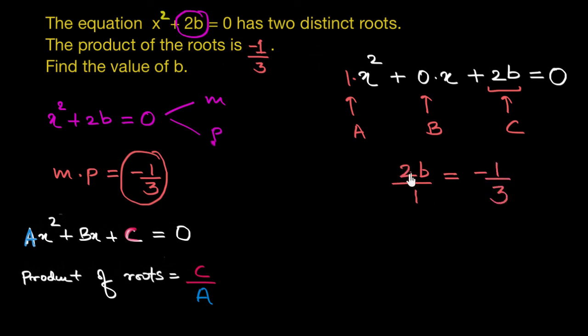Now we have 2b equal to -1/3. And let's divide both sides by 2 now. So b would be equal to -1/6. Hence the value of b that we were looking for is -1/6.